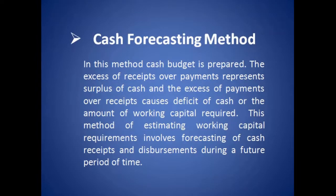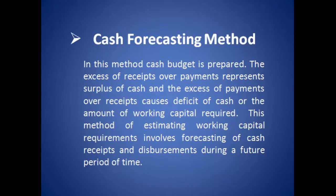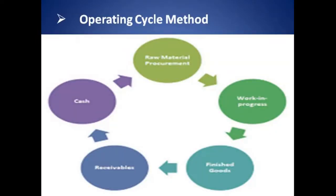The third method is cash forecasting method. In this method, the same principles as the cash budget are followed — a cash budget is prepared. The excess of receipts over payments represents a surplus of cash, and the excess of payments over receipts causes a deficit of cash — that is the amount of working capital to be arranged. This method involves forecasting of cash receipts and disbursements during a future period of time.